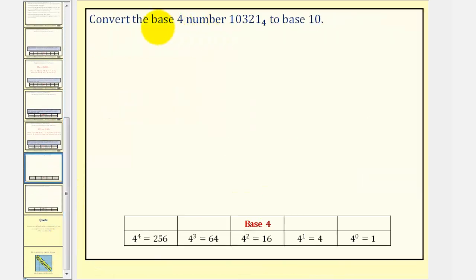Let's look at some more examples. We want to convert the base 4 number 10,321 to base 10. So I think it's always helpful to start with the base, which in this case is 4, and start with 4 to the zero, which we see here. Work our way left.